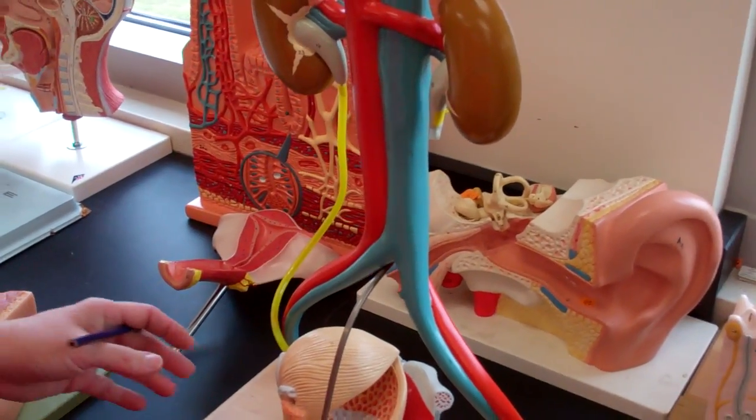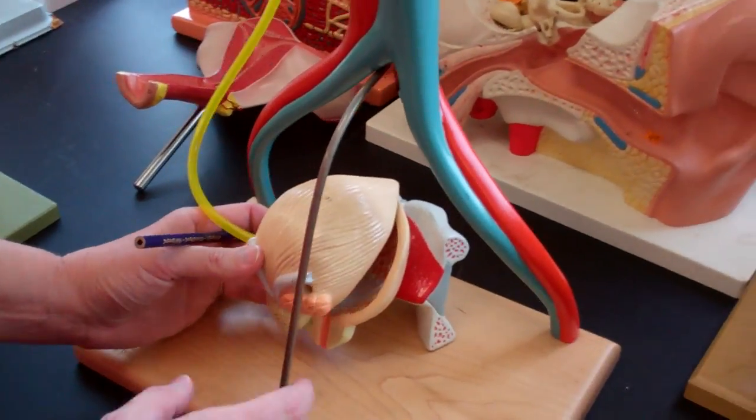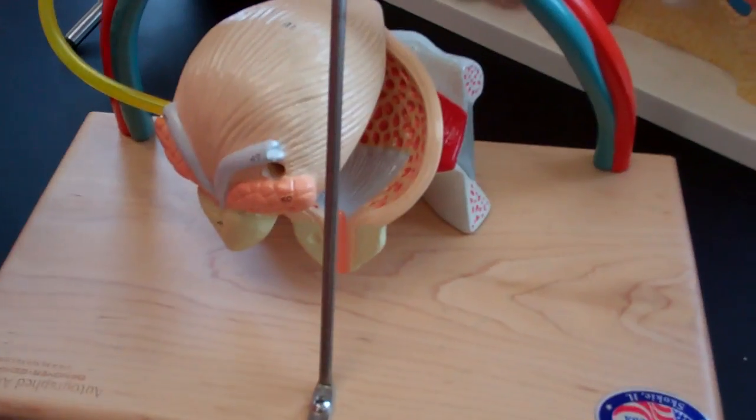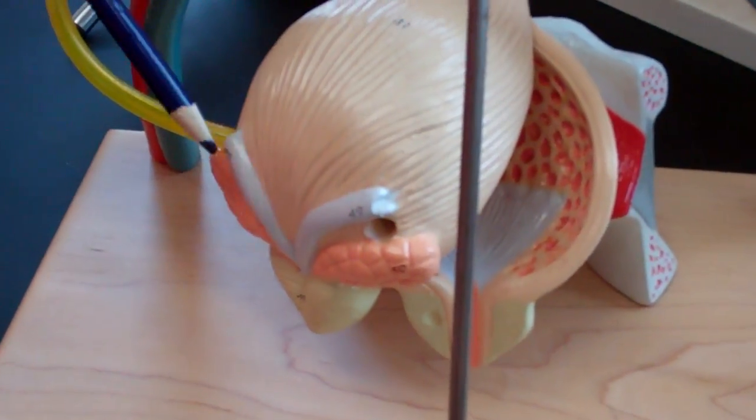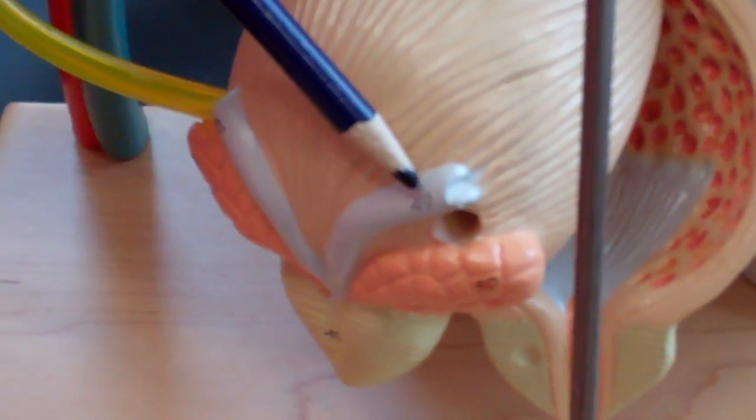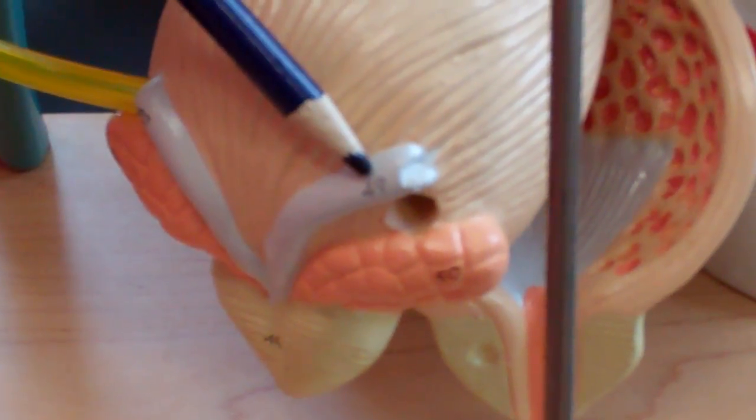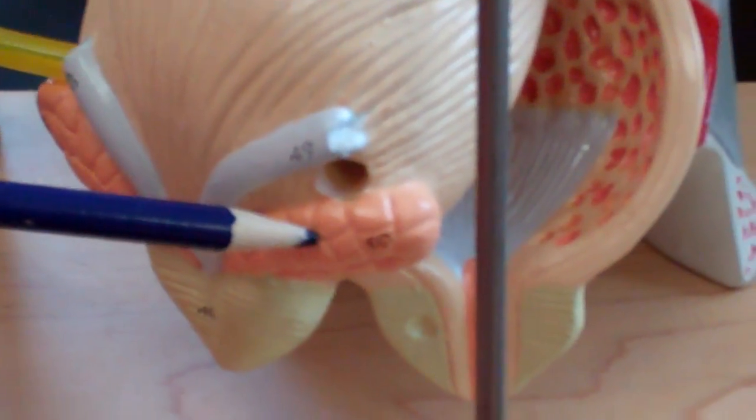Ready for males? This model really only has three structures that are important when it comes to males. Back here, 49, and they're labeled the same on both sides. This is the vas deferens. This is the seminal vesicle. And this is the prostate gland.